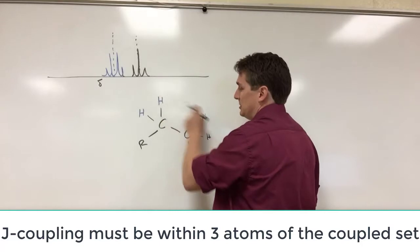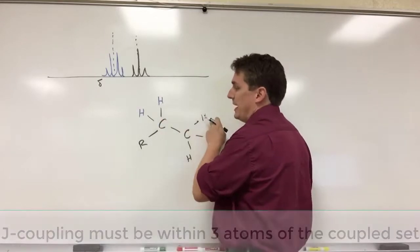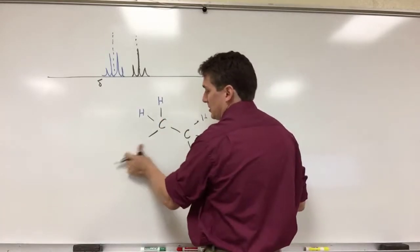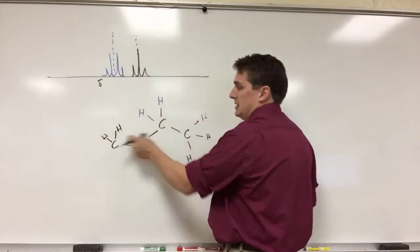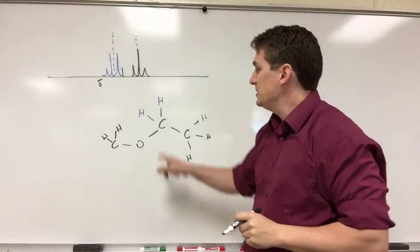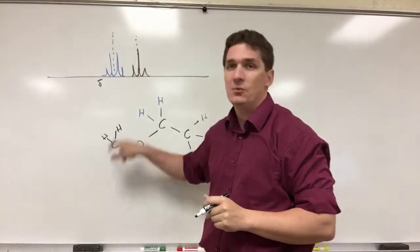So if you look at this hydrogen, this hydrogen will couple these hydrogens because they're one, two, three atoms away. But let's say this R group here was an O, this was a carbon, we got a hydrogen and a hydrogen here. These would not J-couple to these hydrogens because there's too many atoms. One, two, three, four atoms away.